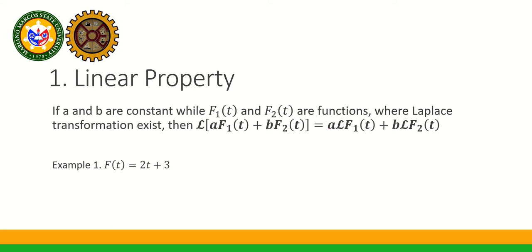So you just isolate the constant and then separately get the Laplace transform of each function. Let's try Example 1: F(T) = 2T + 3. We have a table of Laplace transforms provided, so we don't need to use the long method. We separately get the Laplace transform of each function: the Laplace of 2T plus the Laplace of 3.